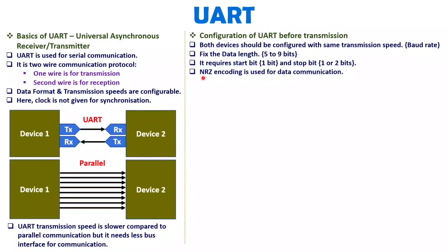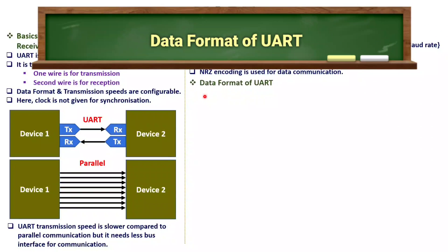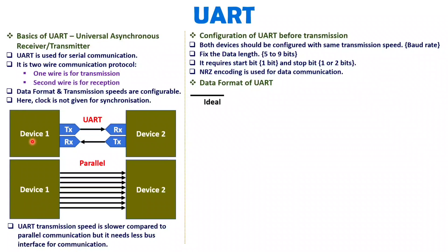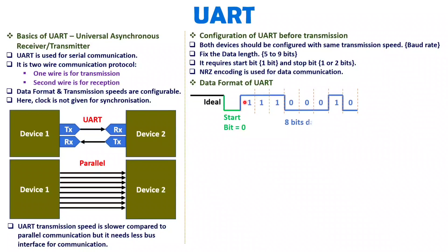Now let me explain the data format of UART. When device 1 is sending to device 2, the transmitter line is ideally at logic high. First, we send a start bit, which is logic 0. Once device 2 sees the start bit, it understands that communication is beginning. Since both devices are configured at the same speed, after the start bit, device 1 forwards the data — for example, 8 bits of data.